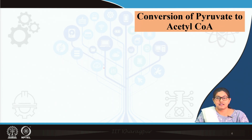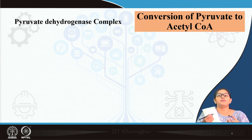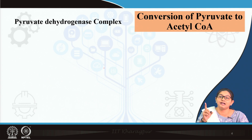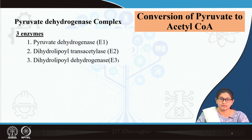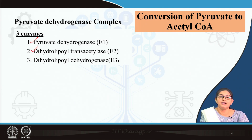In the mitochondrial matrix, the enzyme pyruvate dehydrogenase complex is present in the inner mitochondrial membrane. This enzyme complex is very complex — there are 3 different enzyme activities: enzyme 1 is pyruvate dehydrogenase, enzyme 2 is dihydrolipoyl transacetylase, and enzyme 3 is dihydrolipoyl dehydrogenase.